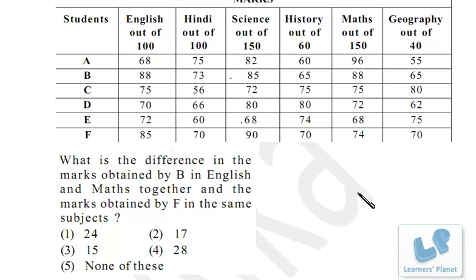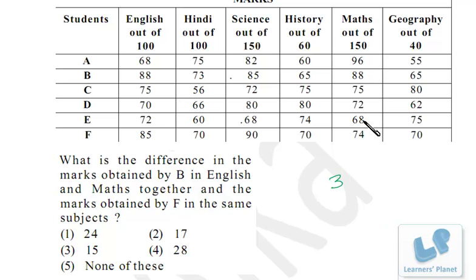In Maths, B has 88% and F has 74%, so the percentage difference is 14%. But we need the marks difference. The total marks for Maths are 150, which is 3/2 of 100. So we multiply the percentage difference by 3/2: 14 × 3/2 = 21 marks.